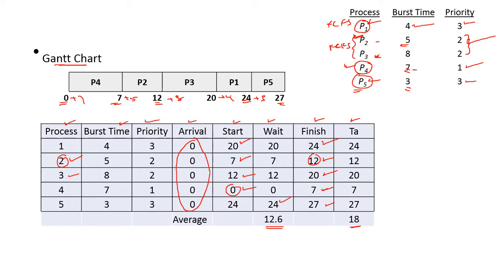Likewise, all the processes will be executed. The average waiting time for all the processes is 12.6 and the average turnaround time for all the processes is 18.